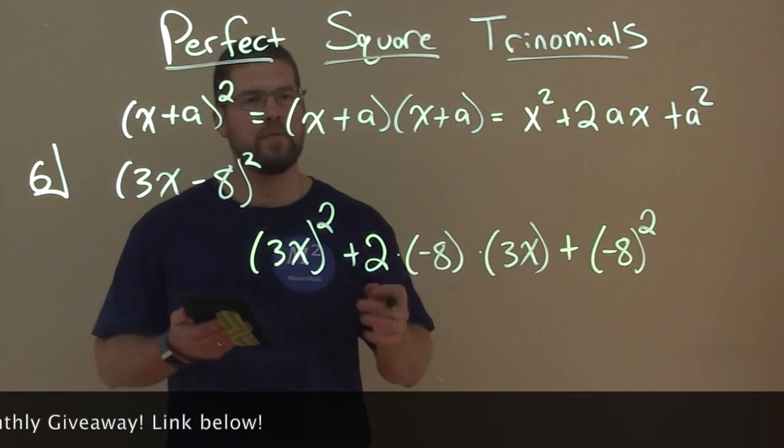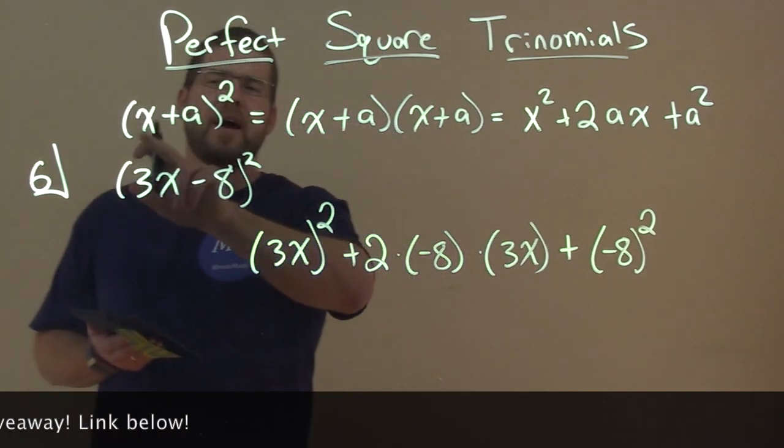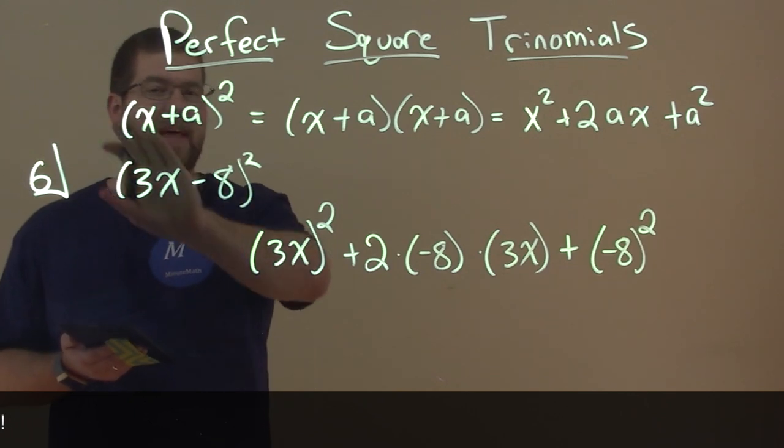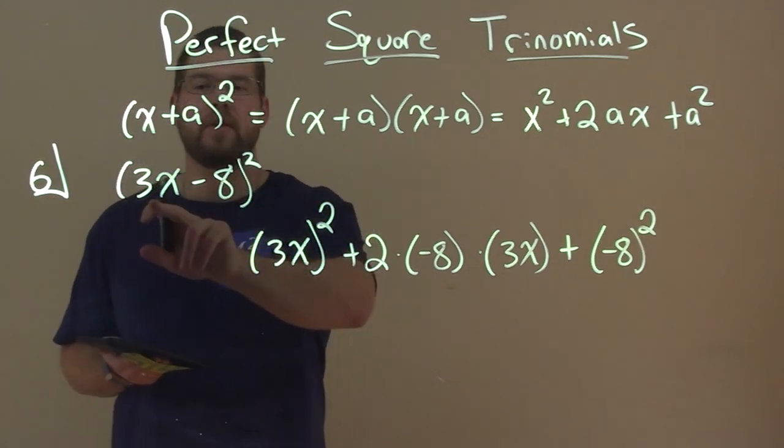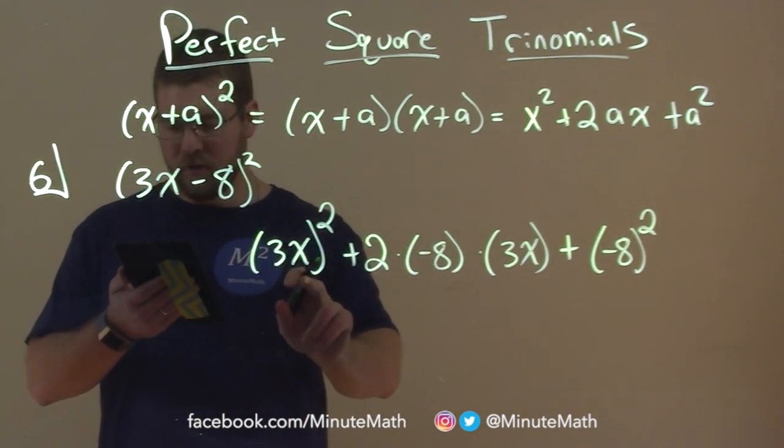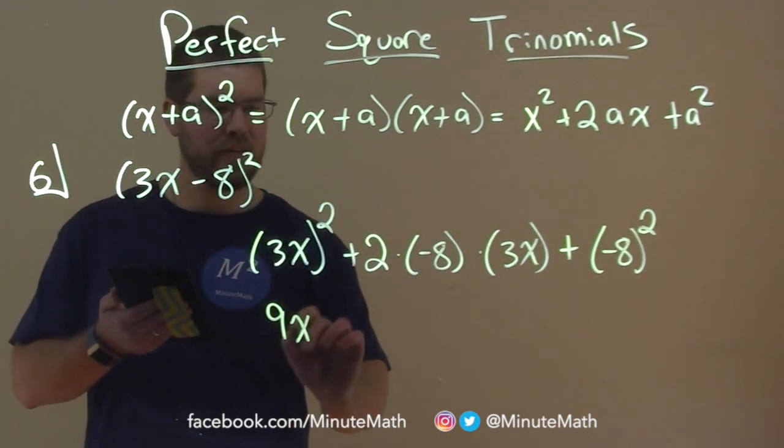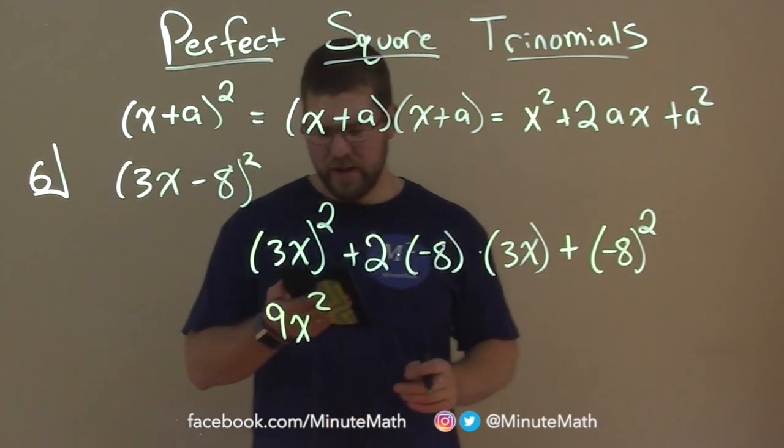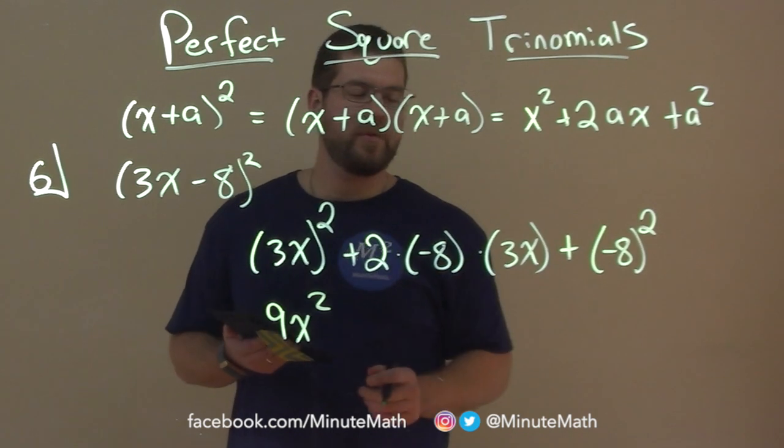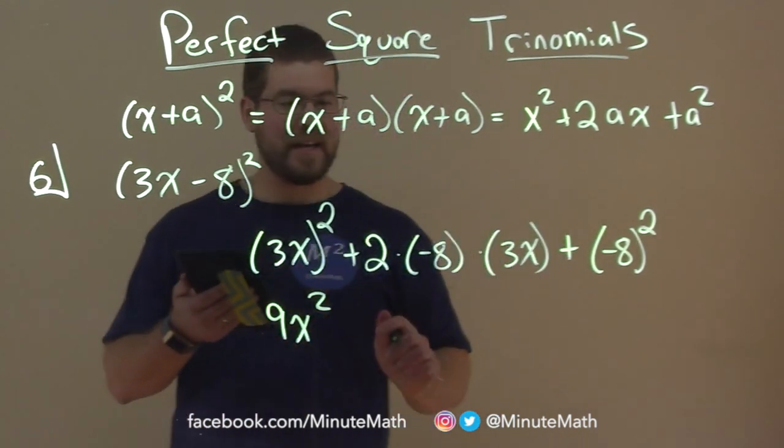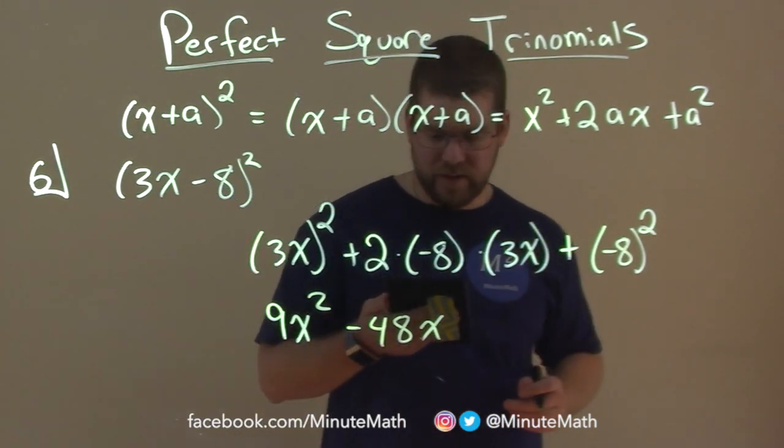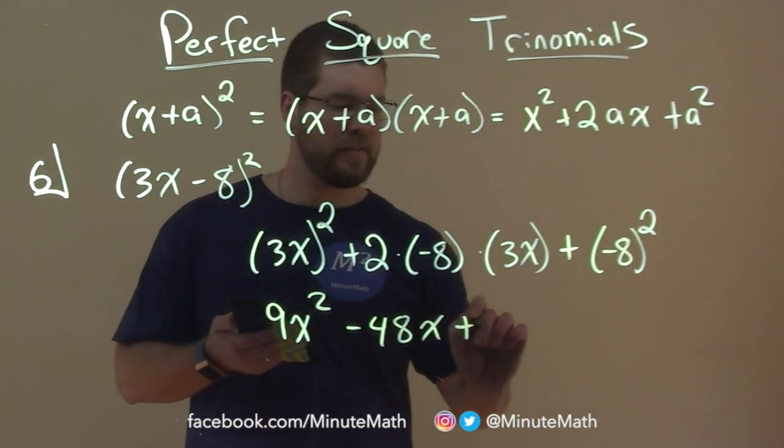Now we can simplify. Again, be careful - sometimes it's a little confusing where this x you think is just a variable x, but it's that whole thing being the first term, the 3x here. So let's simplify this out: (3x)² is 9x². 2 times -8 times 3 - well, -8 times 3 is -24, times 2 is -48, so we have -48x. And lastly, (-8)² is positive 64.